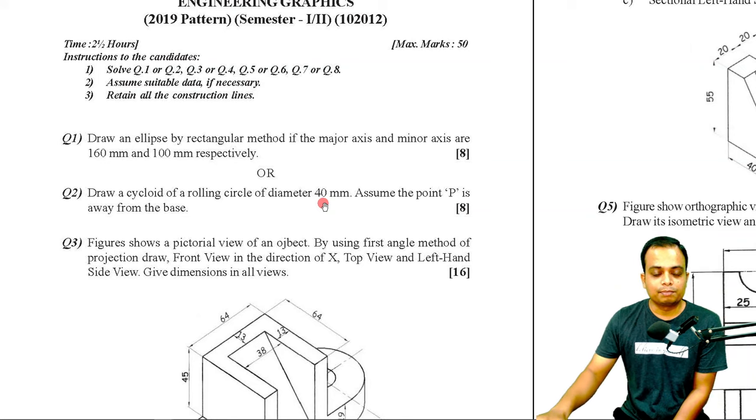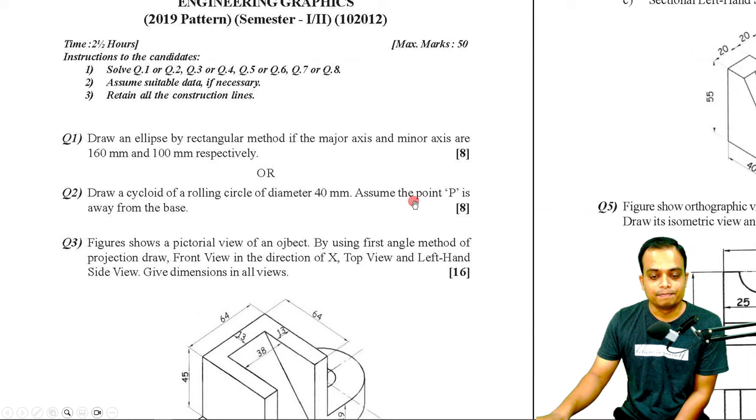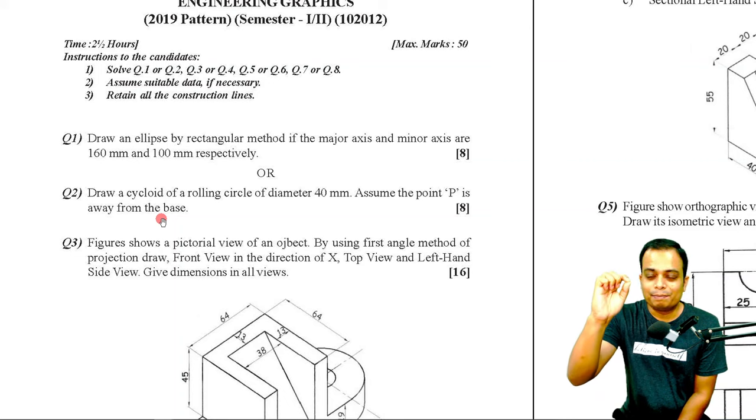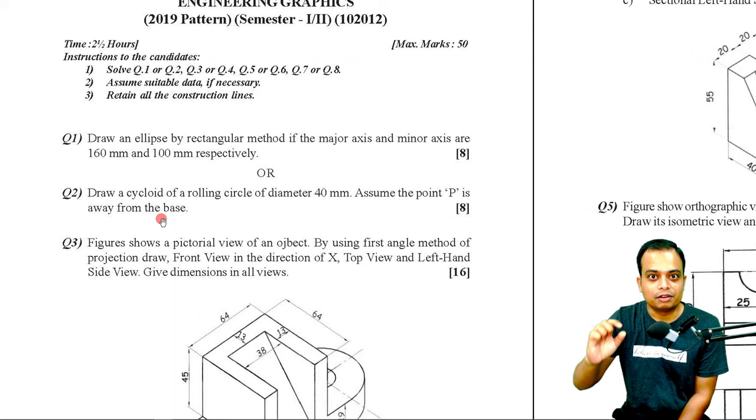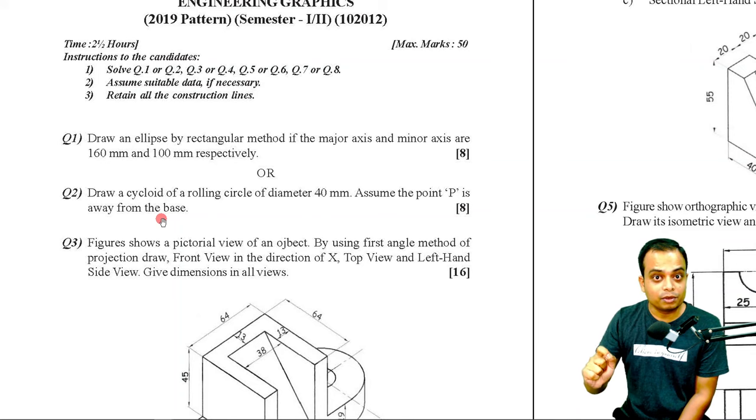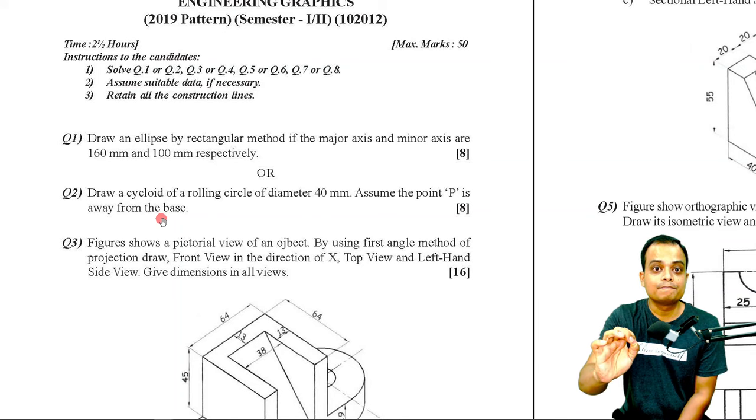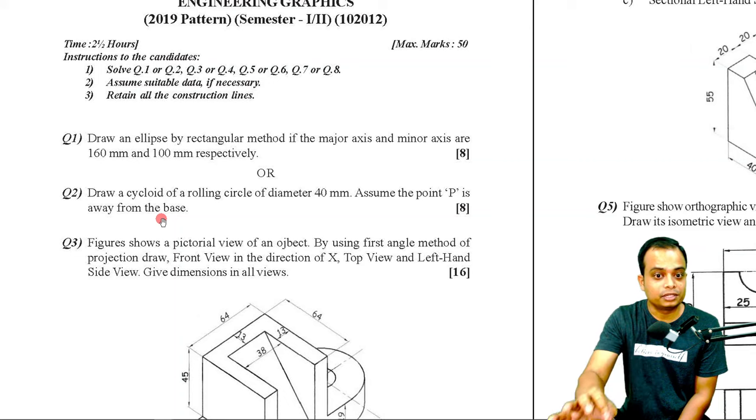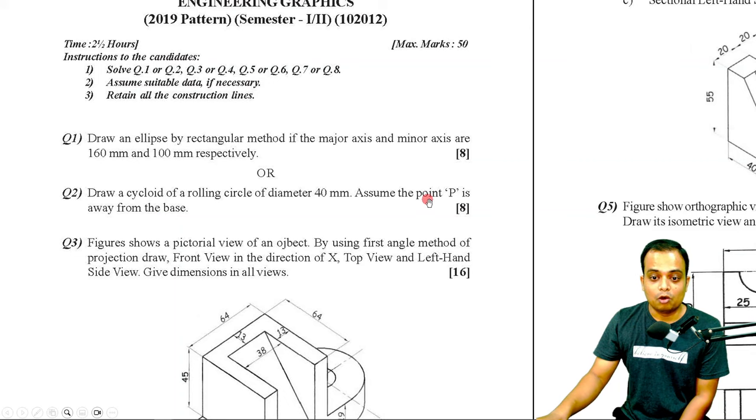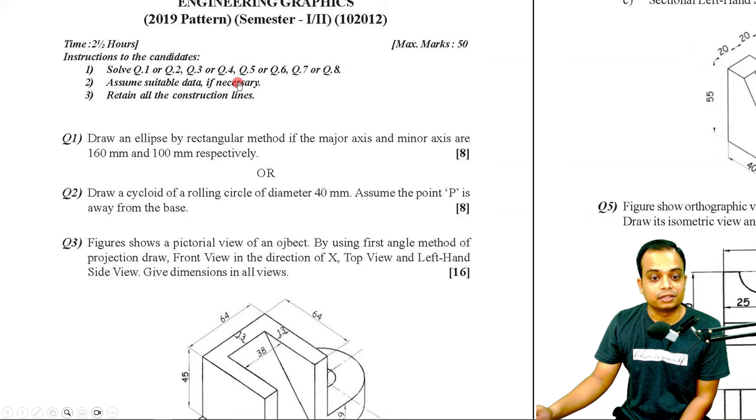So what is that special case? Please read this sentence: assume the point P is away from the base. A pure cycloid is when the point P is exactly on the circumference. If it is inside, it's a case of inferior trochoid. If it is outside or away from the base, it is a case of superior trochoid. I'll show you how it's done. And basically this was the confusion. And you also need to assume how far you are going to keep this point P. Assume suitable data if necessary.